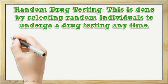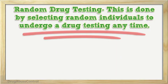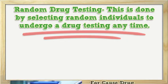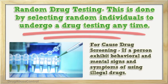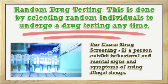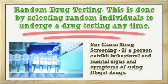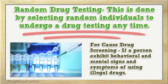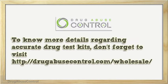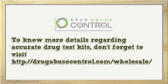Random drug testing: This is done by selecting random individuals to undergo drug testing at any time. For-cause drug screening: If a person exhibits behavioral and mental signs and symptoms of using illegal drugs, the company may request an employee to undergo drug testing.